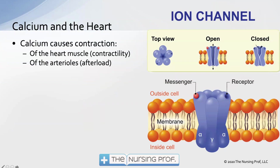Calcium causes contraction of the heart muscles, so that increases contractility. We need an adequate amount of calcium reaching the heart to maintain contractility. We also need enough calcium available so the arterioles can contract, which maintains blood pressure — we measure the contraction of the arterioles by our afterload.